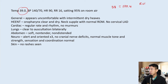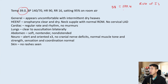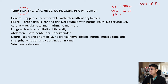A handy trick for converting Celsius to Fahrenheit is the rule of fives: for every 0.5°C increase, the Fahrenheit digits always add up to five. So 38.5°C equals 101.3°F, 39°C equals 102.2°F, 39.5°C equals 103.1°F, and 40°C equals 104°F. That's a quick way to estimate how high a patient's fever is.